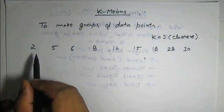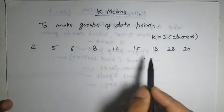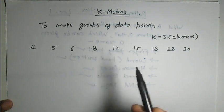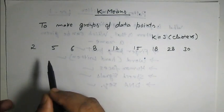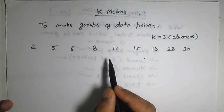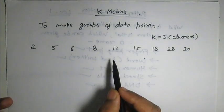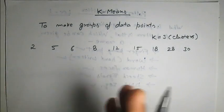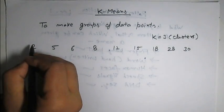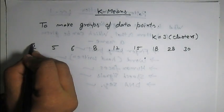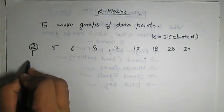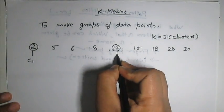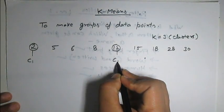The first step is to select cluster centers from these data points. The criteria for selection is that these centers should be farthest apart from each other. So let us take this point as the first cluster center, this point as the second cluster center, and this point as the third cluster center.